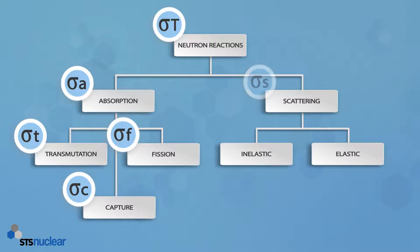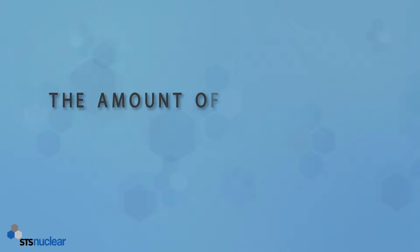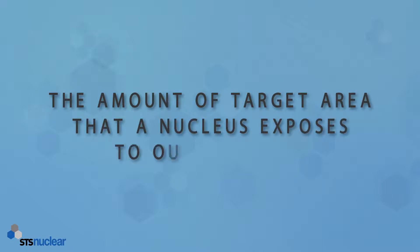On the other side we have sigma S, which is our scattering cross-section, and as we said previously, we only ever deal with elastic scattering collisions when looking at that. So whenever we see sigma S, we're talking about elastic collisions. The microscopic cross-section can really be defined as the amount of target area that a nucleus exposes to our neutron.